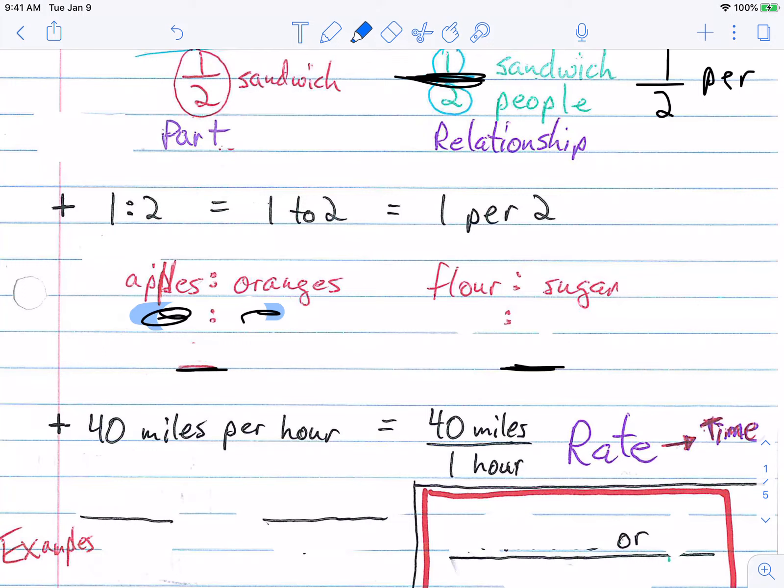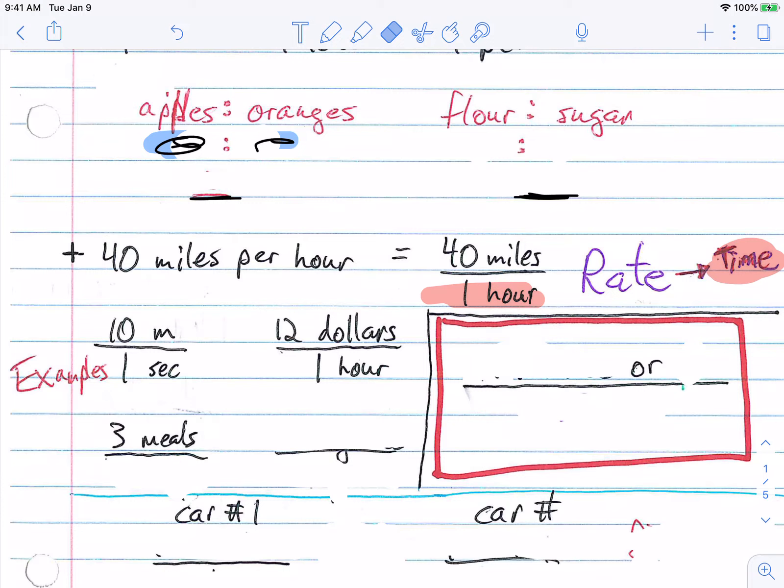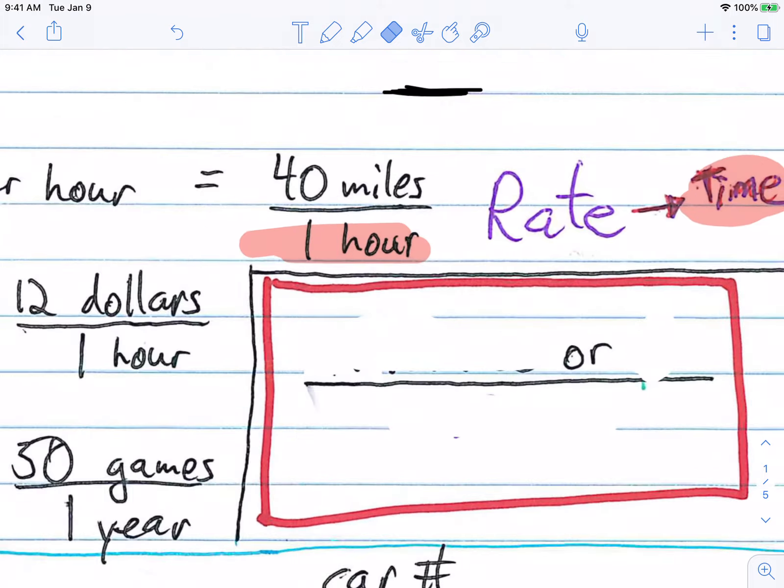If it has time, if it has time in it on the bottom, one hour, one minute, one second, one year, one decade, one century, those are all matters of time, units of time. If it has time on the bottom, it is a rate. So let me give you some other examples here that he's going to use: 10 meters per second for one second, $12 per one hour, three meals for one day, 50 games per one year.